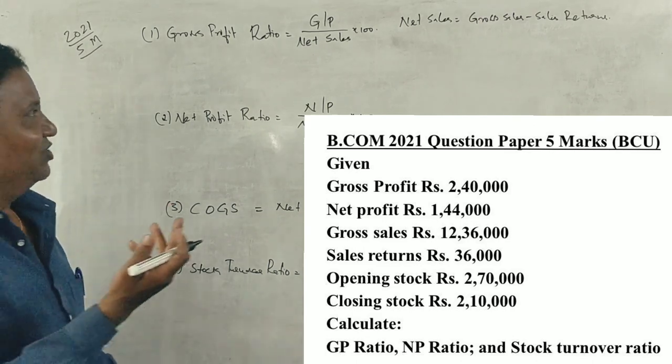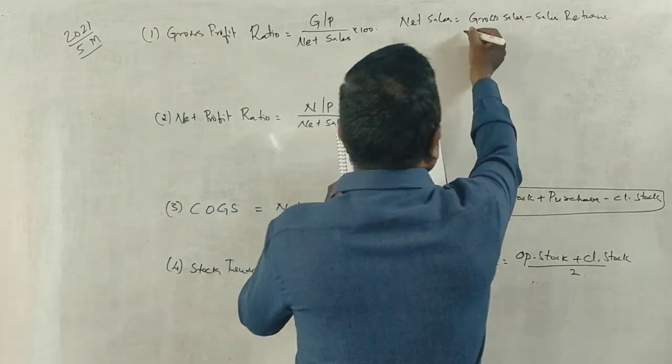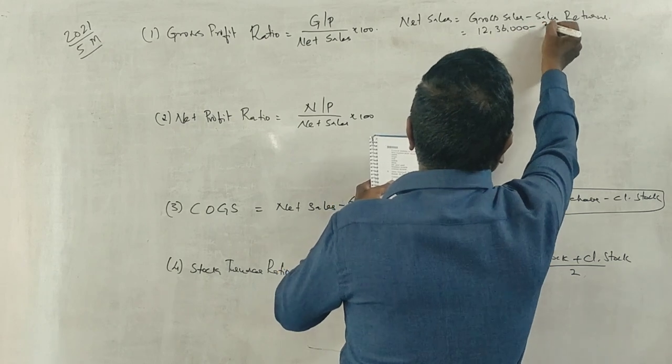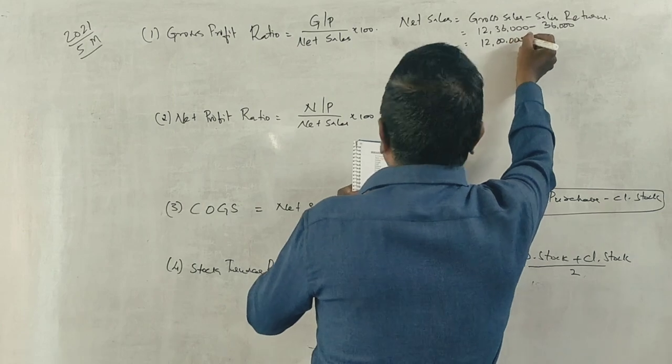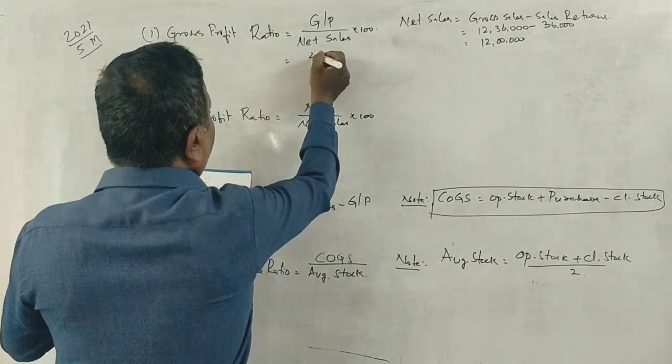First, calculate Net Sales. Gross Sales is 12,36,000, minus Sales Returns 36,000. So Net Sales is 12,00,000.